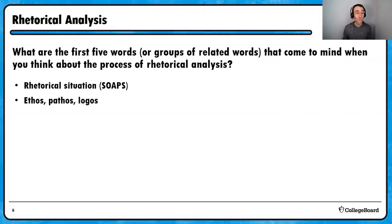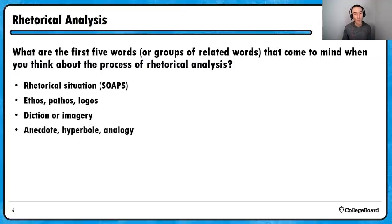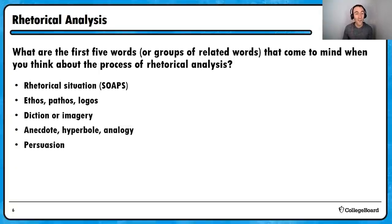Others might have started thinking about different pieces of writing that help make a piece more effective—things like diction, when an author uses specific words with strong connotations, or imagery, when language makes sensory appeals. Others yet might have thought about more specific rhetorical strategies outside the rhetorical triangle, like anecdotes—short personal stories—hyperbole, when we exaggerate for effect, or analogies, comparisons between things to better explain something. Others might have focused on the basic purpose of rhetoric: to persuade an audience, analyzing how an author seeks to persuade. Or the key word of analysis itself—breaking down what the writer is doing and why.